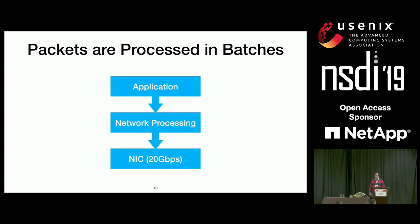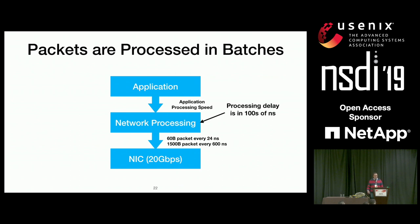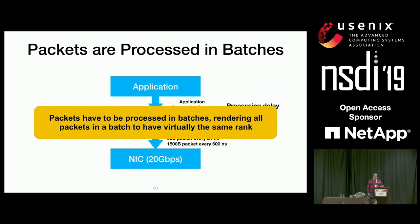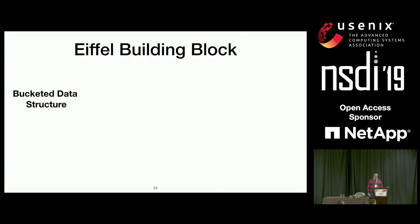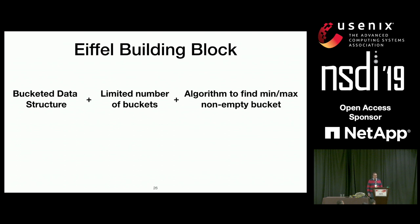The third characteristic is that packets are processed in batches. While applications push traffic at high speeds and network cards require packets at high frequency, there is unavoidable latency in the network processing system, requiring packets to be processed in batches — rendering packets within the same batch to have virtually the same rank. This means we don't care about small differences in packet ranks. These three characteristics lead to the observation that bucketed data structures are very useful for accurate scheduling, and with a limited range of integer rank values, we have a limited number of buckets.